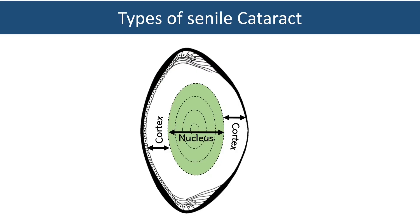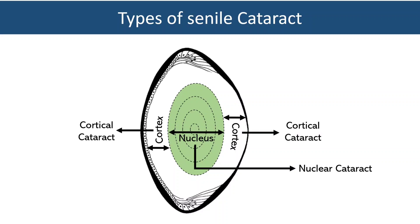Senile cataract can affect different parts of the lens. Based on that, it can occur in different forms. One is nuclear cataract affecting the nucleus of the lens. It can also start from the cortical area and is called cortical cataract. Sometimes it can be a mixed cataract, which has both the nuclear and cortical components.